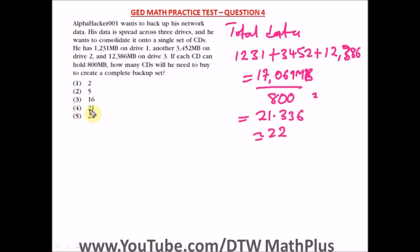Option 4 is saying 21. If he buys 21 CDs, he is not going to create a complete backup set. There will be 336 MB of data still remaining for him to backup. So the right option here should be 22. Our correct option here is option 5, which is 22.